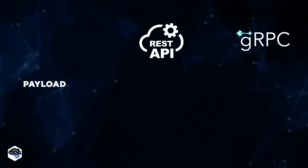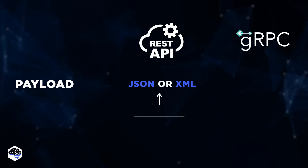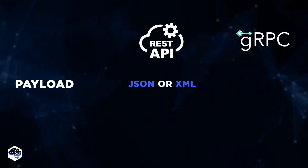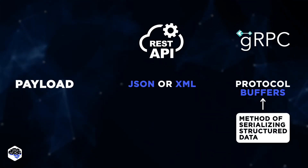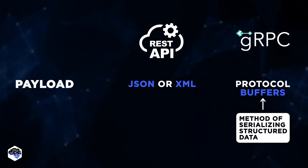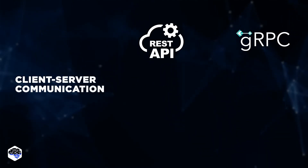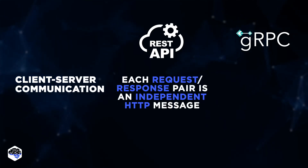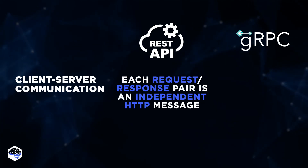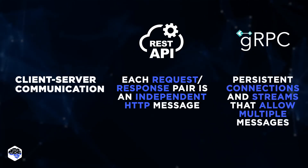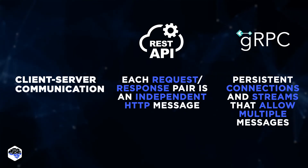Next, payload: REST communicates in JSON or XML, which are text-based formats. gRPC uses protocol buffers, a method of serializing structured data that is more efficient and less verbose. As for client-server communication, in REST each request and response pair is an independent HTTP message, whereas gRPC uses persistent connections and streams to allow multiple messages to be passed in either direction simultaneously.